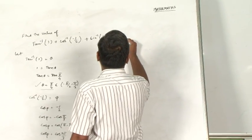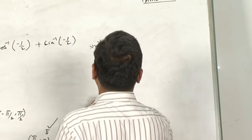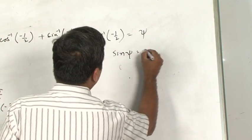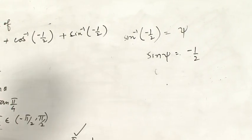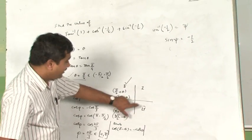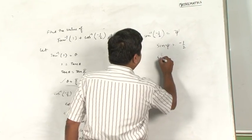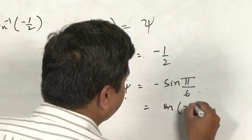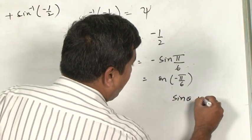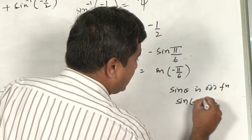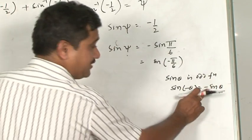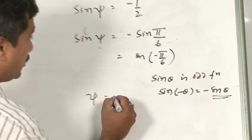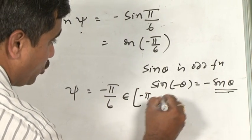Let sin⁻¹(-1/2) = ξ, so sin ξ = -1/2. Sine is negative in the third and fourth quadrants. When traveling in the clockwise direction, the fourth quadrant comes first. So we write sin ξ = -sin(π/6) = sin(-π/6), using the odd function property sin(-θ) = -sin θ. Therefore ξ = -π/6, which falls well within [-π/2, +π/2].